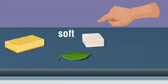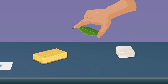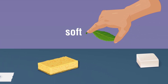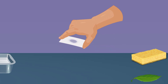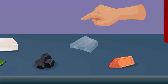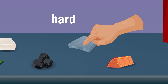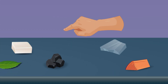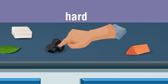Materials which were easy to press or can be scratched easily are soft. Materials which were difficult to press are hard. Classify each material as hard or soft.